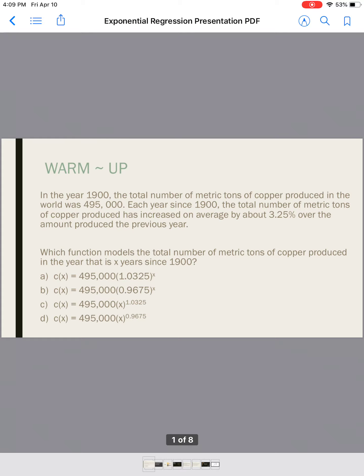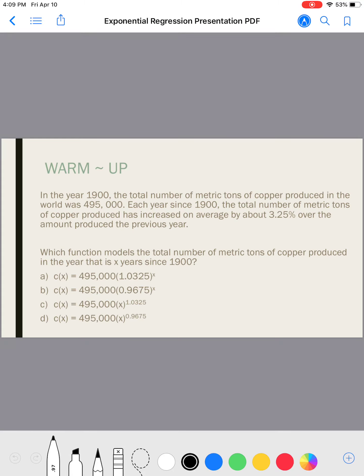All right, so I'm going to go through this presentation. It's going to be a longer video, so if you skip forward ahead, it's something you might not get. In the year 1900, the number of metric tons of copper produced in the world was 495,000. Each year since 1900, the total number of metric tons of copper produced has increased on average by about 3.25% over the amount produced the previous year. Which function models the total number of metric tons of copper produced in the year that is X years since 1900?